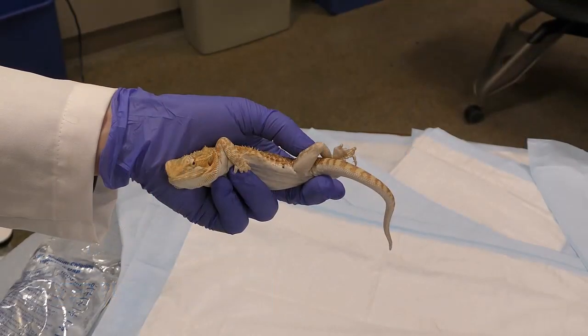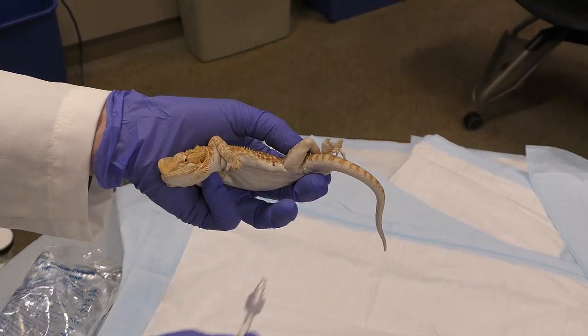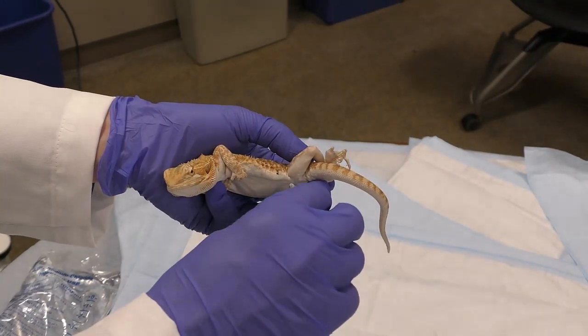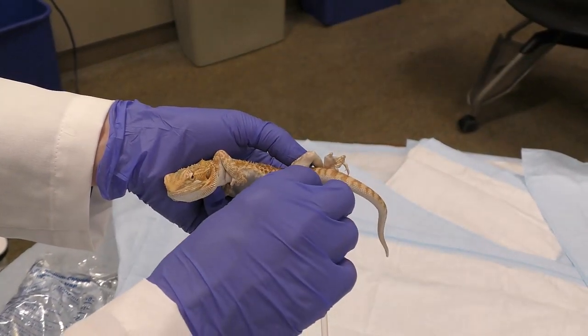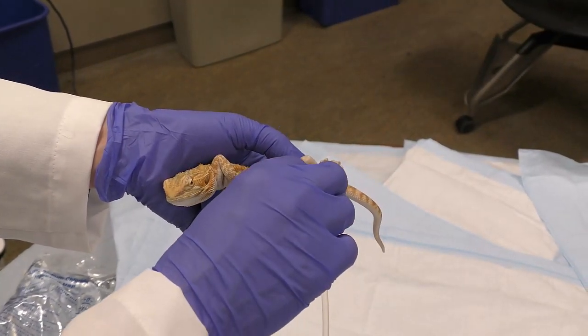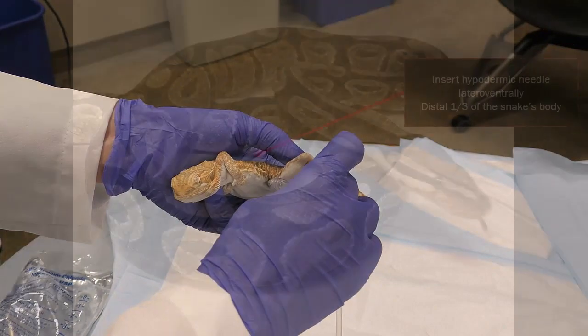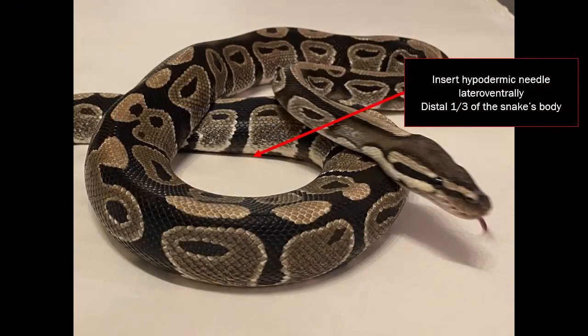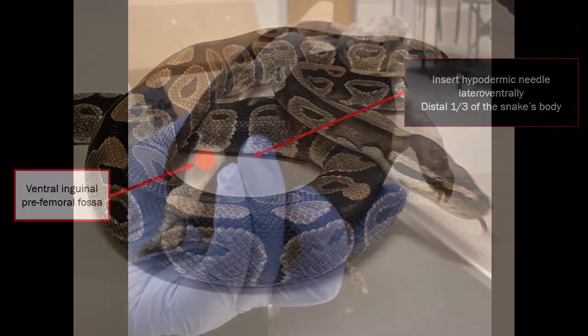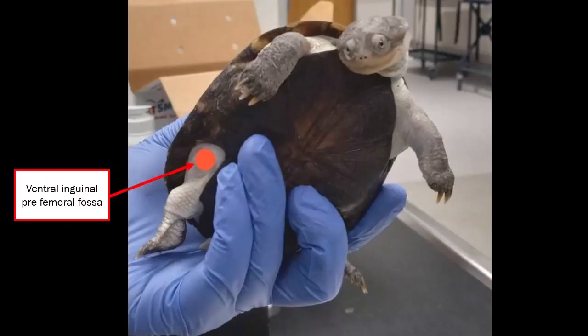In all species, intravenous or intraosseous access is always preferred to intraperitoneal fluids. IP fluids are limited to cases where intravenous or intraosseous access is not possible. Examples include neonatal dogs and cats and very small exotic species.